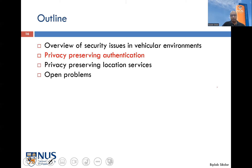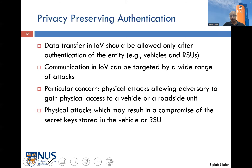Let's look at some possible ways to preserve privacy of users while still harnessing the benefits of the Internet of Vehicles. In particular, I'll take the next ten minutes or so to talk about one specific example of a privacy-preserving protocol: privacy-preserving authentication. We want vehicles, before they can exchange messages in the network, to be authenticated — but without disclosing any private information that could lead to identification by third parties who shouldn't have access.